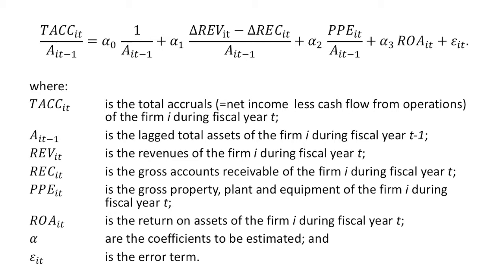We also have A, which is the lagged total assets, referring to the assets from the preceding year. We have REV for revenues, the gross revenues, REC for the gross receivables, PPE for property, plant, and equipment gross. We have ROA for return on assets, and the alphas, of course, are the coefficients, and epsilon for the error term.